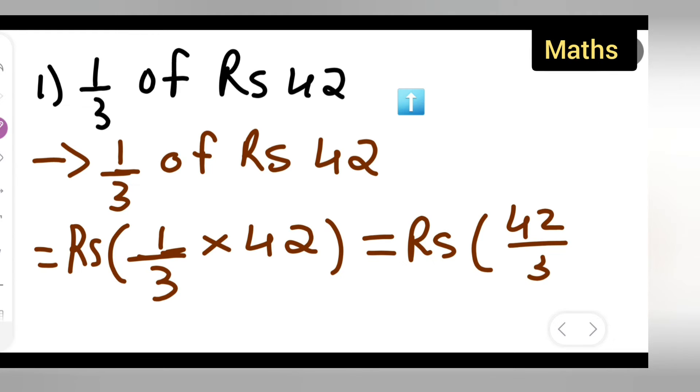Now I hope you all know how to divide this: rupees 42 upon 3. Now 42 will be here and 3 will be here. 3 ones are 3, 1 is remaining, bring it down. So 3 fours are 12, is your answer.